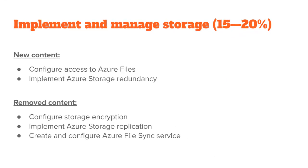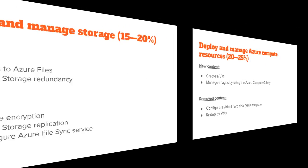For the second section, there are a few more changes. It's talking about Azure storage, and they've added content around Azure Files access and Azure storage redundancy. What they've taken away is the concept of encryption, the contents of replication, and the file sync service. We could argue that replication and file sync is a concept of redundancy, and as such they've just reworded the requirement — there's some rearranging of the words here for storage.